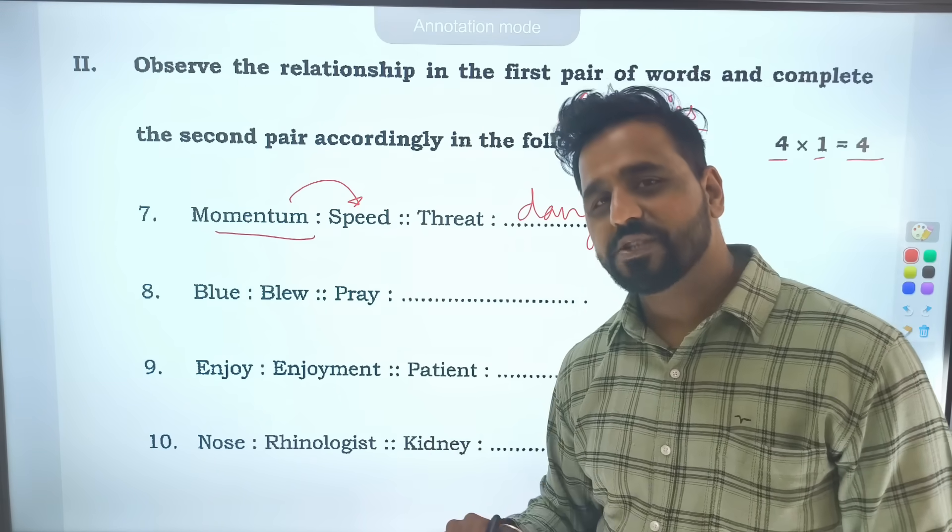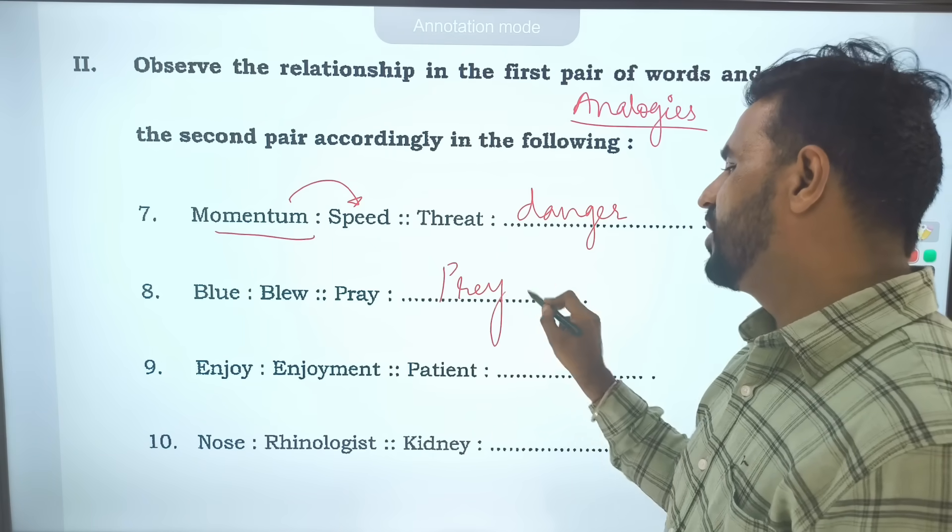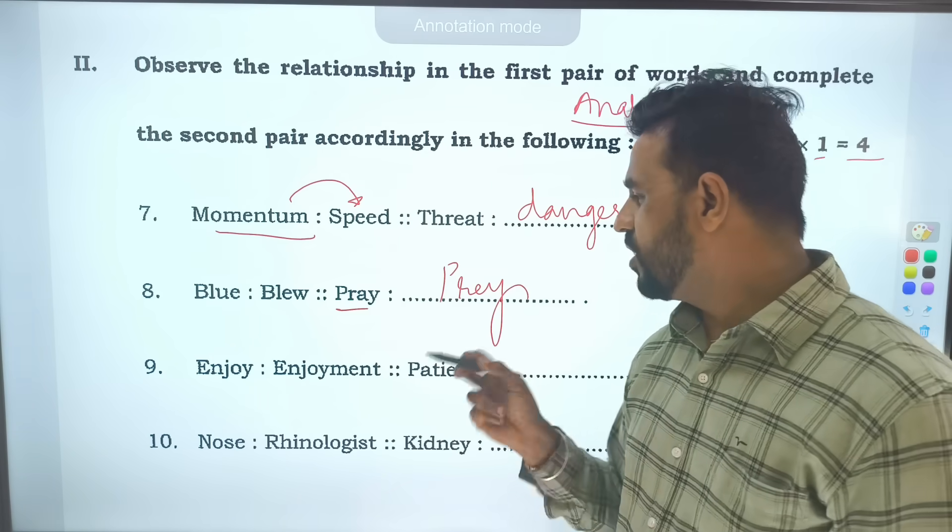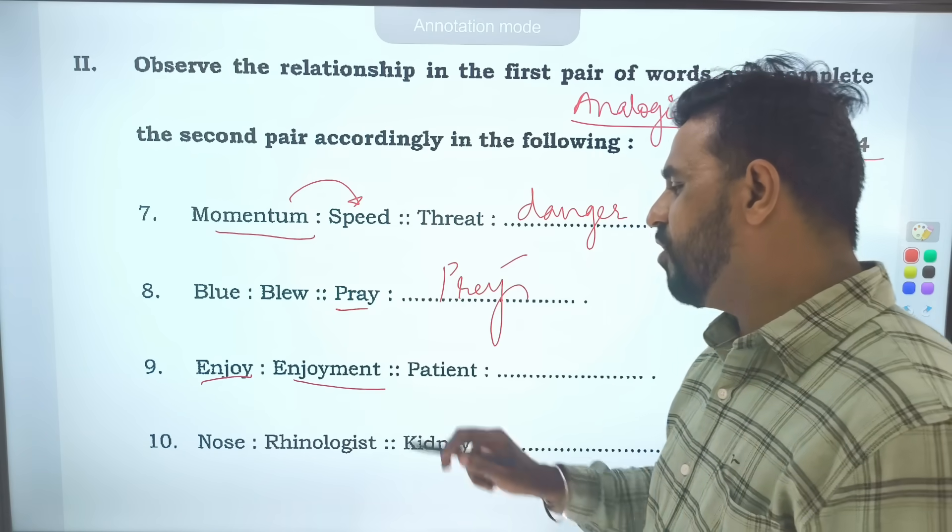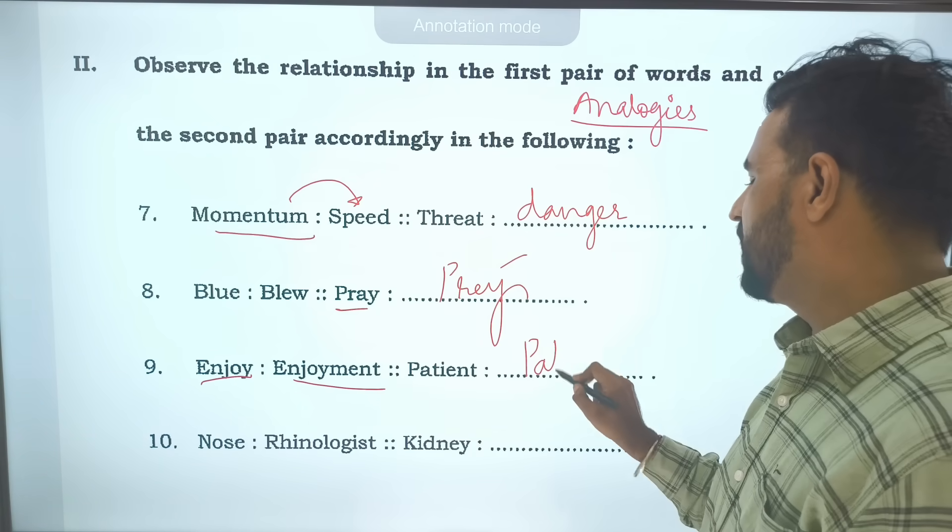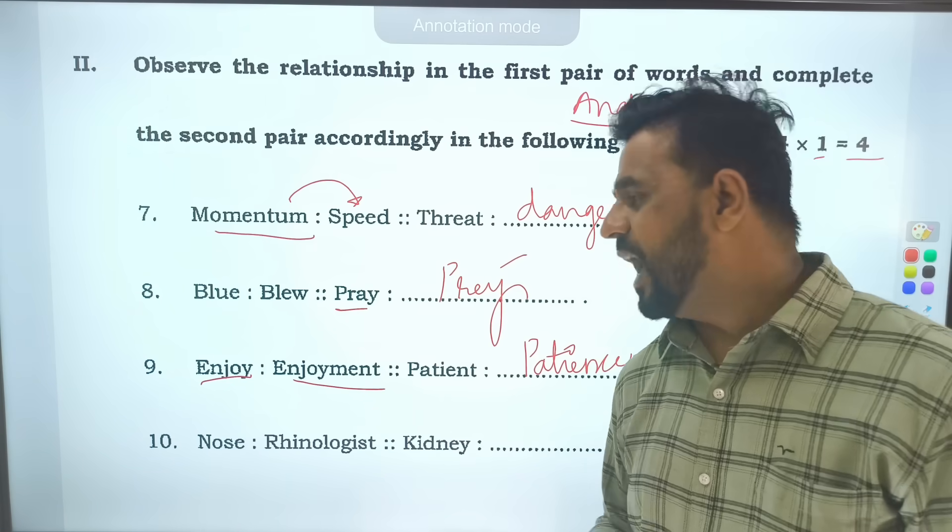Blue and blew - this is the past tense. Pray will become prayed. This pray means to pray to God. This prey means to capture. Then enjoy will become enjoyment. Patient will become patience. Have patience.